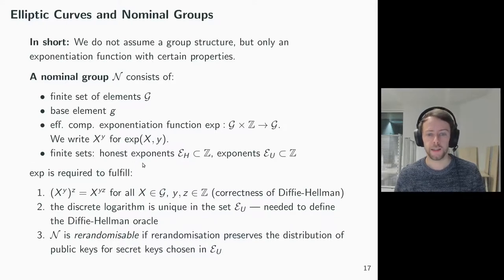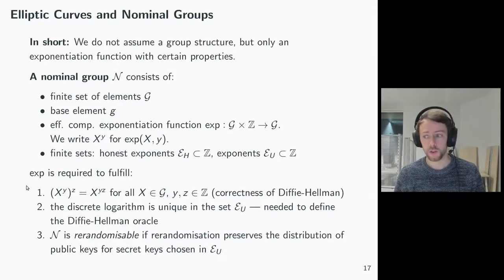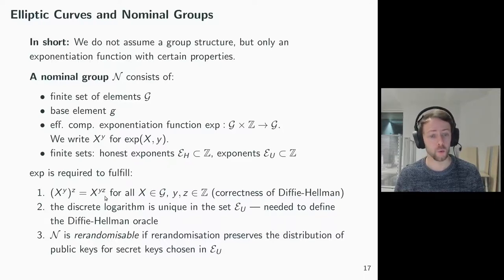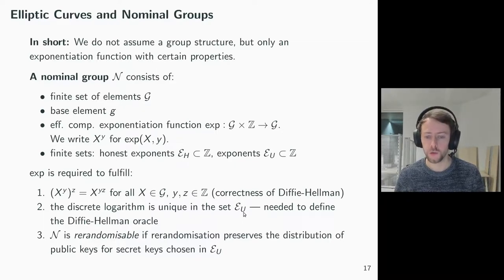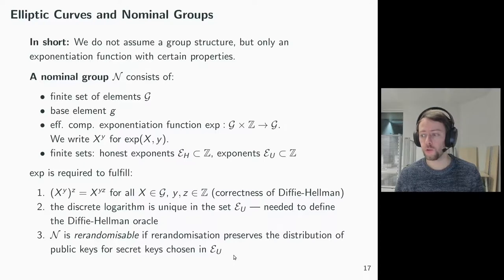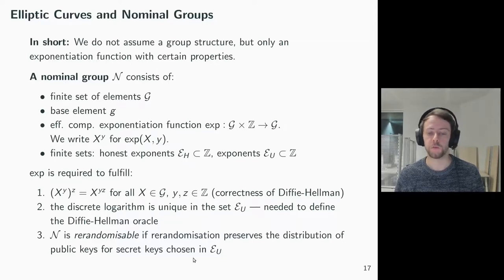The exponentiation function needs to have certain properties. First, we need that (x^y)^z equals x^(y·z) — that's basically correctness for the Diffie-Hellman operation. Then, the discrete logarithm must be unique in the set EU; that's needed to define a meaningful Diffie-Hellman oracle, and the U in EU stands for unique discrete logarithm. And finally, we call a nominal group re-randomizable if re-randomization preserves the distribution of public keys for secret keys that have been chosen in EU.